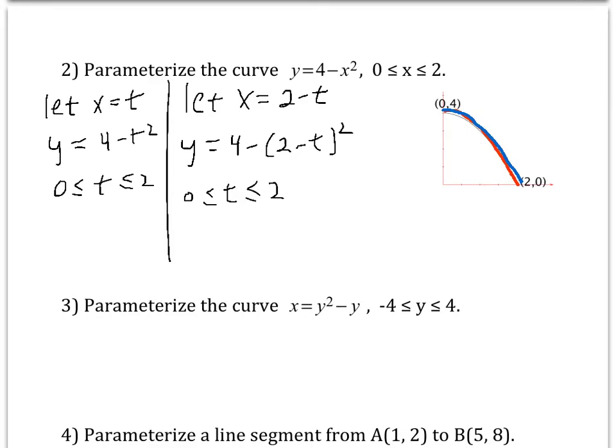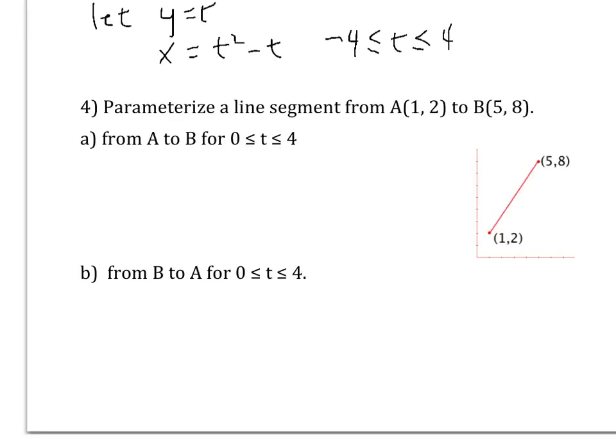Sometimes it might be helpful to parametrize curves going different directions. Another advantage is, if you want to parametrize a curve that's not a function, in some cases you might let y equal t. And then x would be t squared minus t. So t goes between negative 4 and 4. Why don't you try one? See if you can parametrize this line segment from A to B.